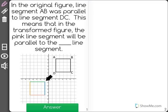In the original figure, line segment AB was parallel to line segment DC. This means that in the transformed figure, the pink line segment will be parallel to the blank line segment.